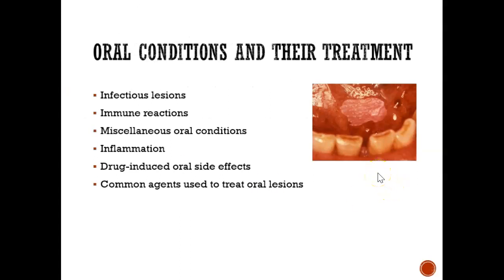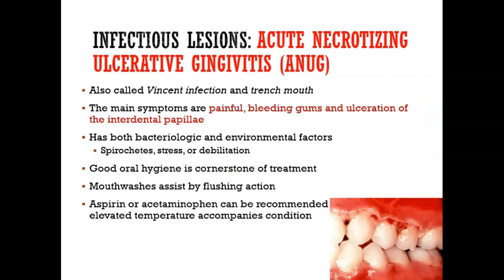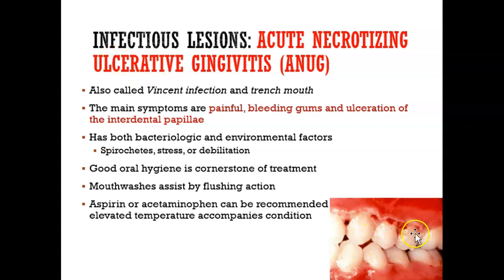There are many conditions that we'll look at in these slides. The first one is acute necrotizing ulcerative gingivitis, also known as ANUG. This is a very painful infection. Acute means pain. Necrotizing means flesh-eating — it's eating away at the gums. Ulcerative means it's ulcered out, and gingivitis means it's inflamed. It looks like this in the gum.